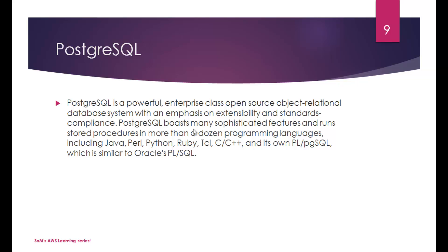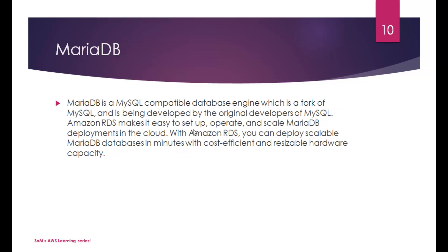PostgreSQL is a powerful enterprise-class open-source object-relational database system with an emphasis on extensibility and standards compliance. It runs stored procedures in more than a dozen programming languages including Java, Perl, Python, Ruby, TCL, C++, and its own PL/pgSQL — similar to Oracle's PL/SQL. MariaDB is a MySQL-compatible database engine, a fork of MySQL developed by the original MySQL developers. Amazon RDS makes it easy to set up, operate, and scale MariaDB deployments in the cloud in minutes.